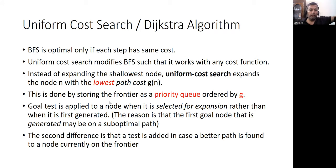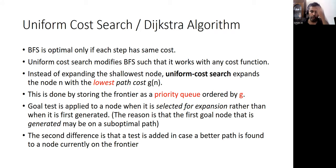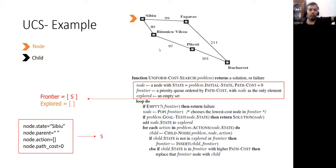The third difference is that we check whether a node already exists in the frontier with a lower cost, and in that case we replace that particular node in the frontier. These are the three differences, and let's see them in action.